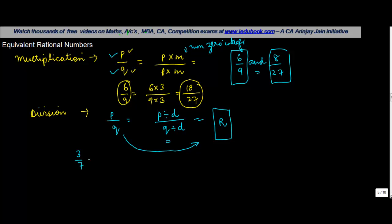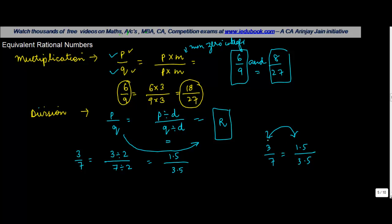For example, if you have 3 upon 7 and you divide both 3 and 7 by 2, you get 1.5 upon 3.5. So we say 3 upon 7 is equal to 1.5 upon 3.5, and both of them are equivalent fractions or equivalent rational numbers.